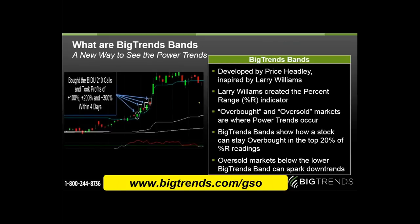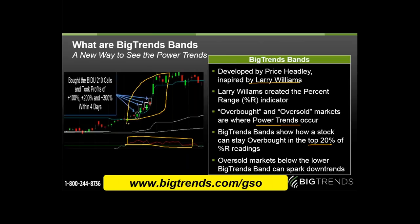When we go look at a past example with Baidu, where we got a big score, the Williams Percent R indicator is another key tool. We want something to stay in the top 20% of its Percent R readings for a bull trend, and in the bottom 20% for oversold markets. When you catch that, the Big Trends Bands will show you that — we've got it in Metastock. When you catch a stock moving outside that overbought threshold, that's where it can really explode to the upside.